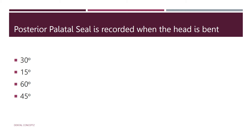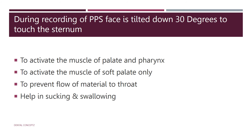Next: the posterior palatal seal is recorded when the head is bent how much? During recording of the posterior palatal seal, the patient's head should be bent 30 degrees to the Frankfurt horizontal plane, because it is the only position when the soft palate is at its maximum downward and forward functional position. The answer is 30 degrees. The face is tilted down 30 degrees toward the sternum to activate the muscles of the soft palate.